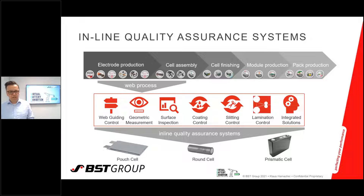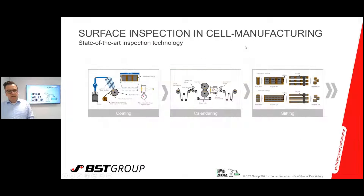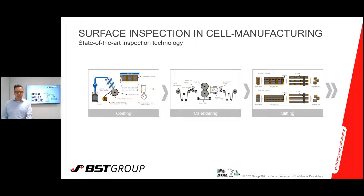We do inline quality assurance for pouched, round, and prismatic cells. Today I would like to focus on three production steps — coating, calendaring, and slitting — regarding state-of-the-art inspection technology.